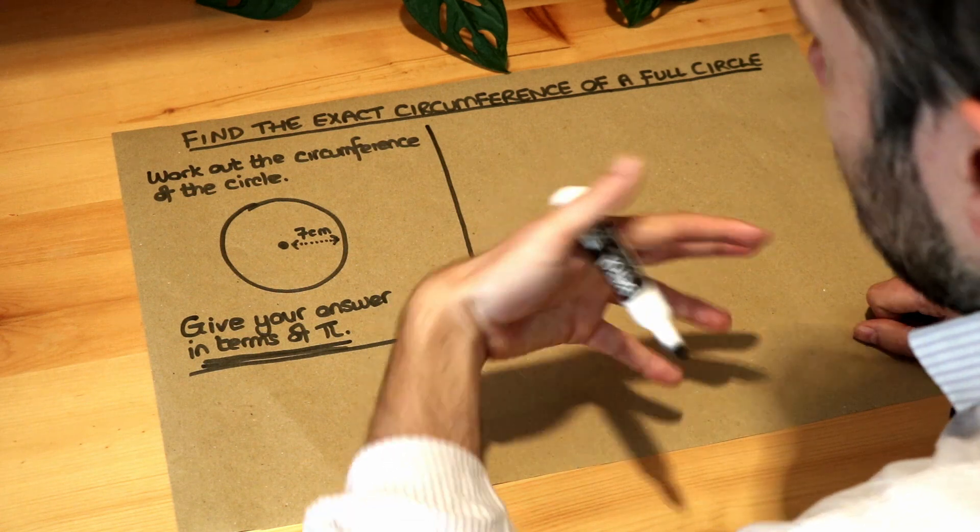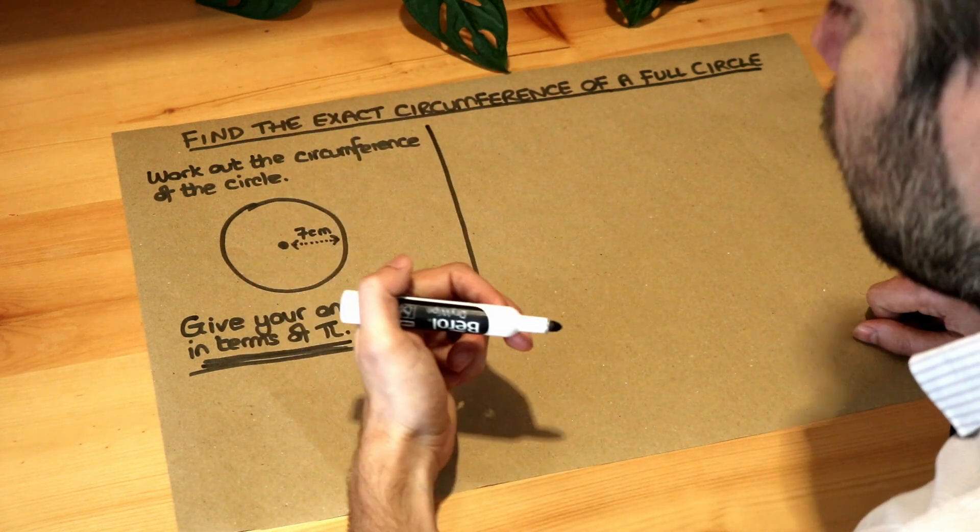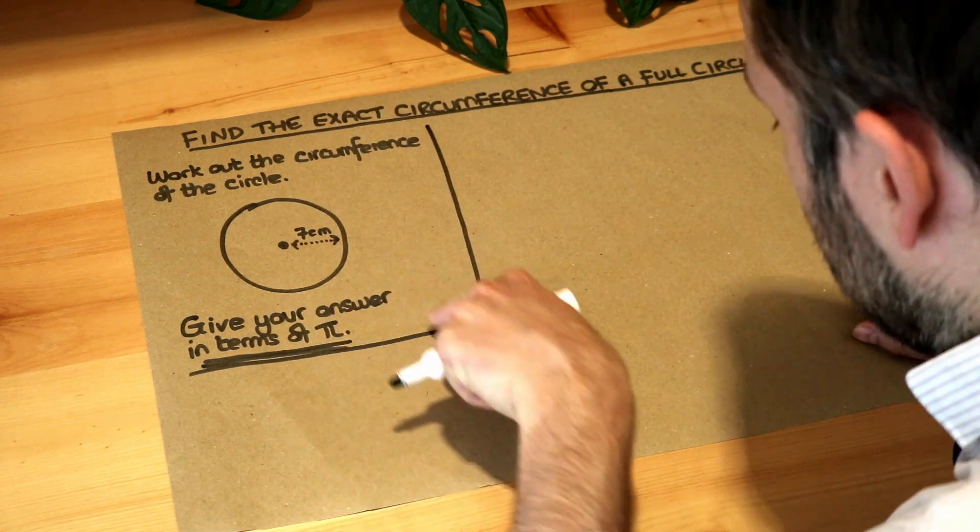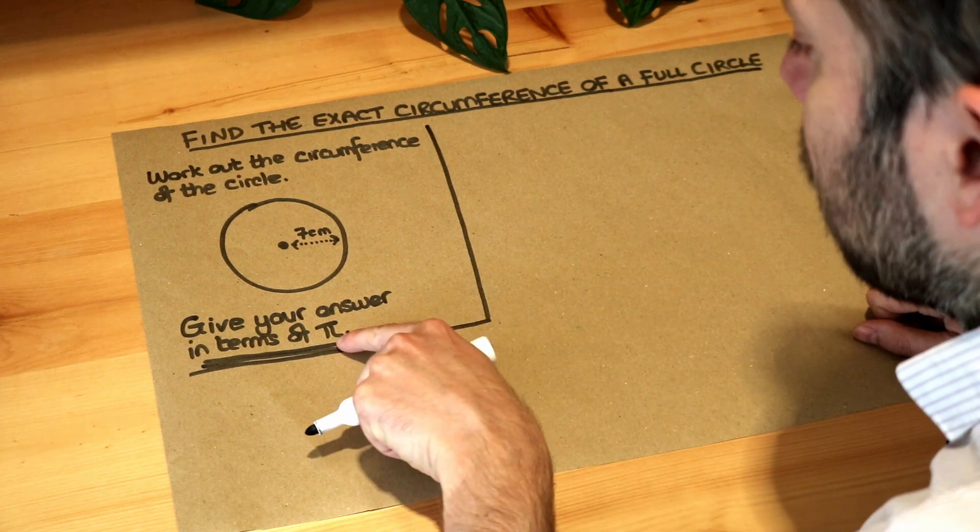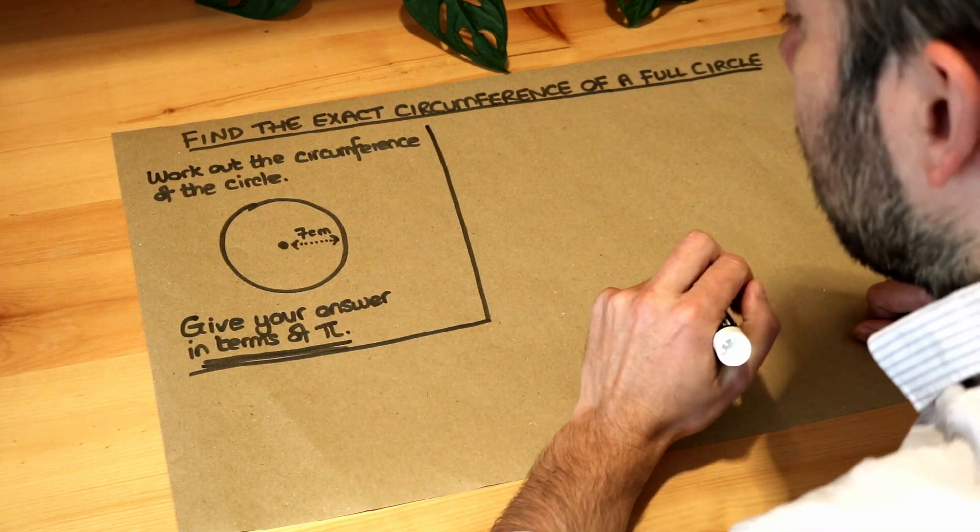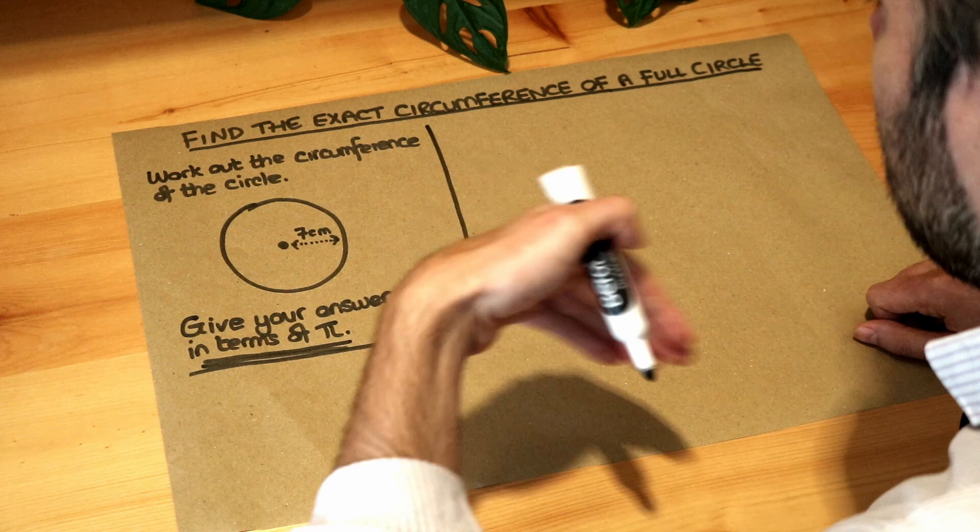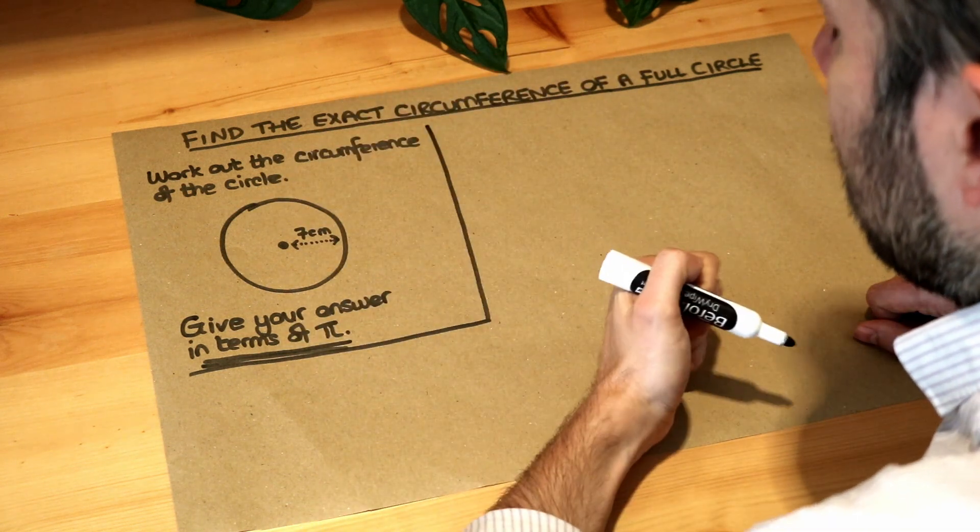Because as soon as we round a decimal to a value like 10.5, we're actually losing some of the accuracy. Because pi, the digits go on forever. So as soon as we round it to a decimal, we're going to lose accuracy. If we keep pi in the answer, then it's an exact answer. We've kept the answer exact.